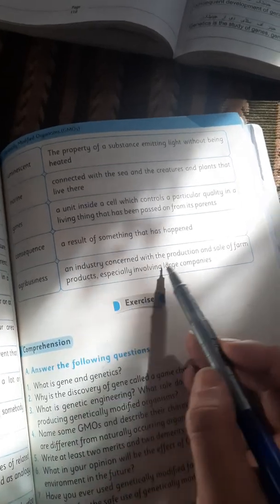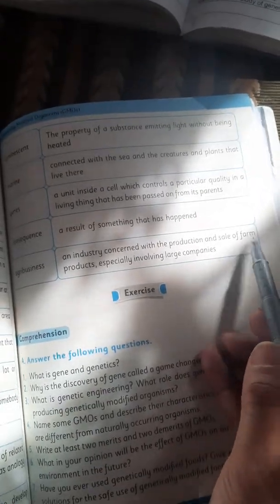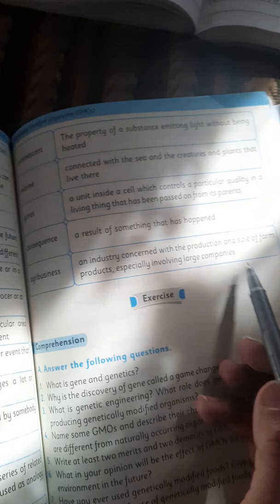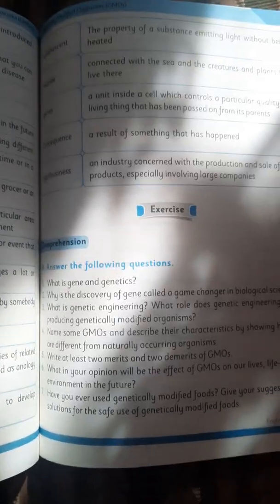Agribusiness: an industry concerned with the production and sale of farm products, especially involving large companies. I hope you like the video. Please like and subscribe our channel, and more videos are coming on this lesson. Thank you.